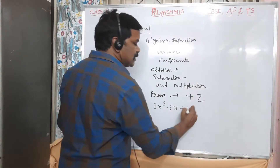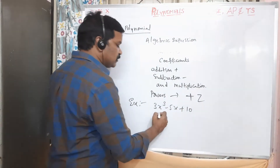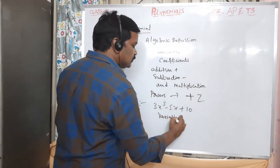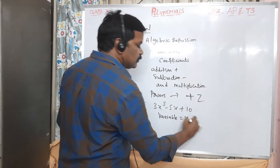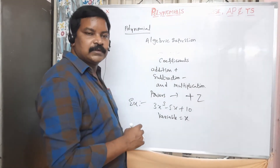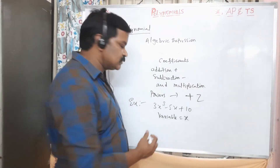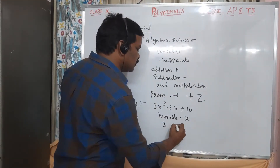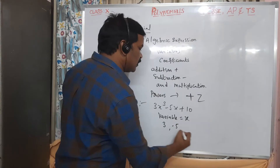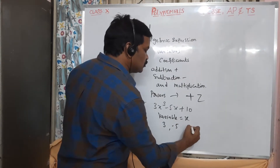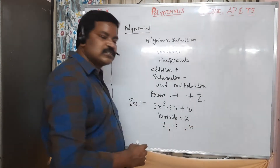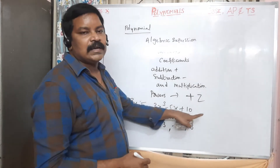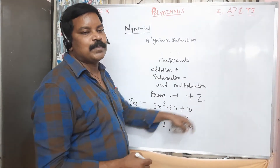In the expression 3x³ minus 5x² plus 10, the variable is x. The coefficients are 3, minus 5, and 10 — these are the coefficients of x³, x, and x⁰ respectively.